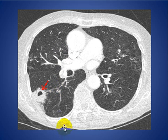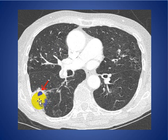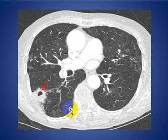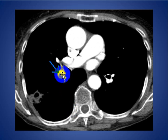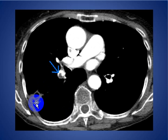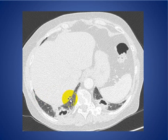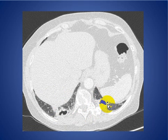Here is a patient with a peripherally located cavitary lesion and some ground-glass opacities. This patient has pulmonary embolism, and the cavitary lesion represents a post-infarction cavity.